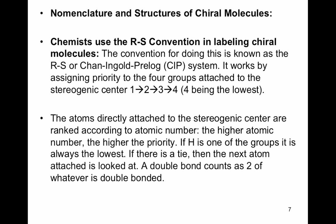Nomenclature of chiral molecules: chemists use R and S in the nomenclature of chiral molecules — the same as plus and minus, and the same as D and L. R is right-handed, S is left-handed. The convention is known as the Cahn-Ingold-Prelog (CIP) system. It works by assigning priority to the four groups attached to the carbon stereogenic center, with number one being highest priority down to four being lowest, based on atomic number. Lowest atomic number has lowest priority; if there's a tie, look at the next-door neighbor.